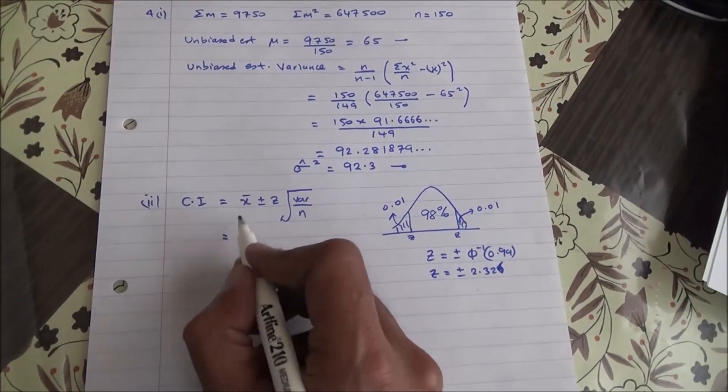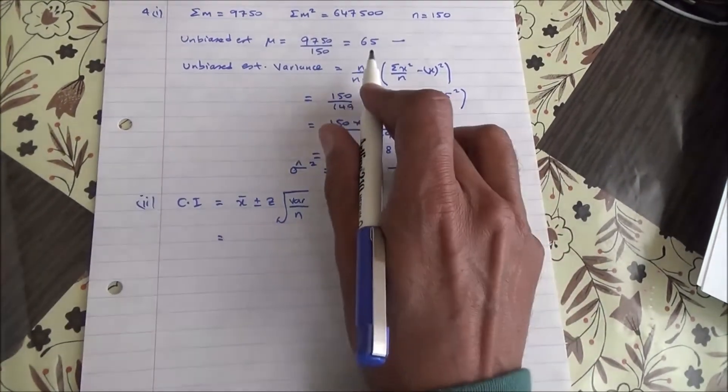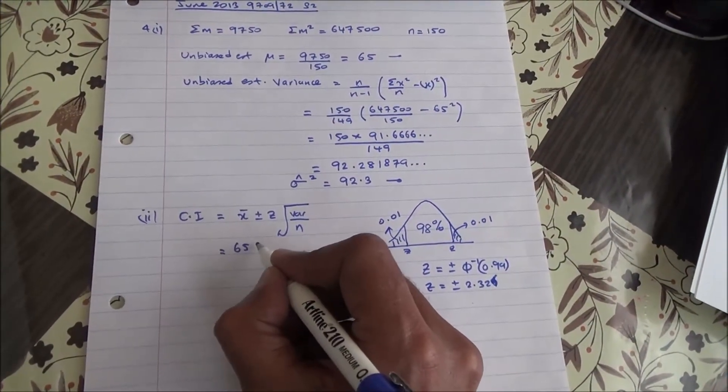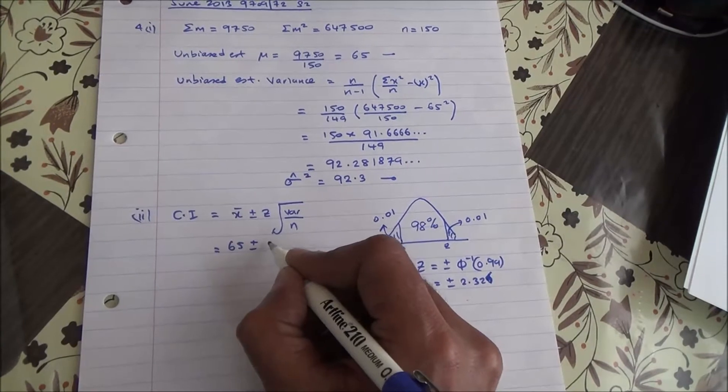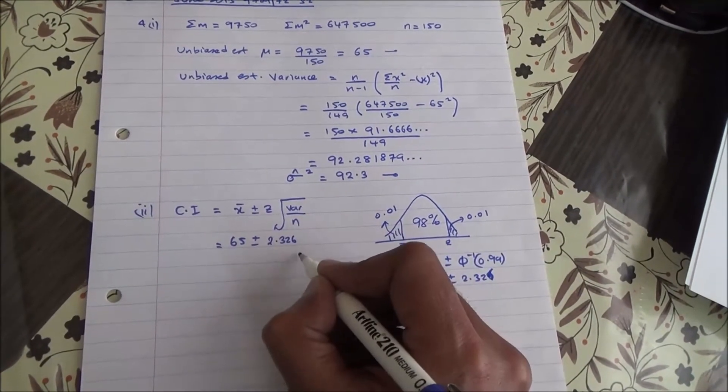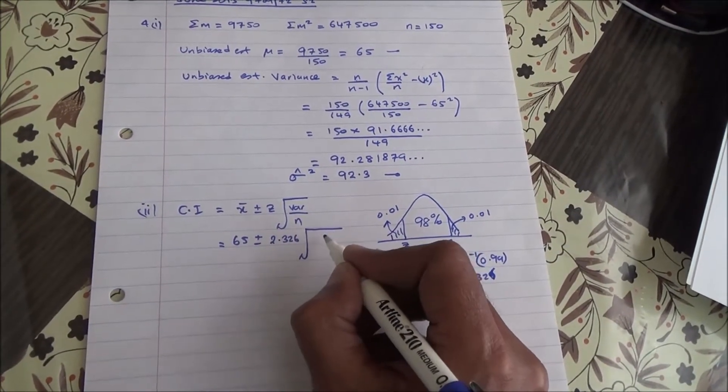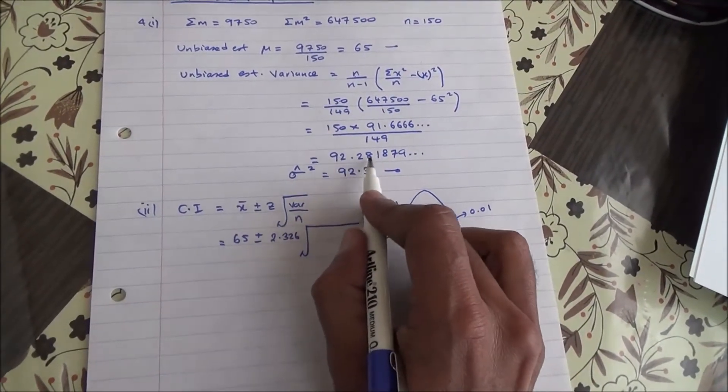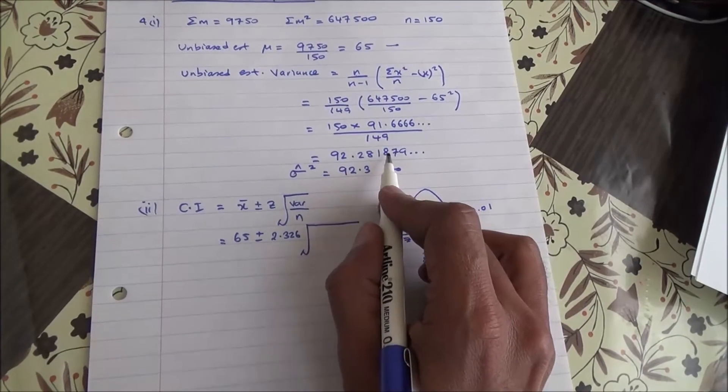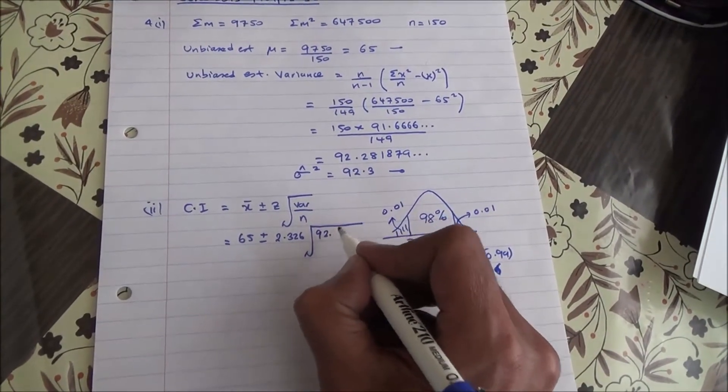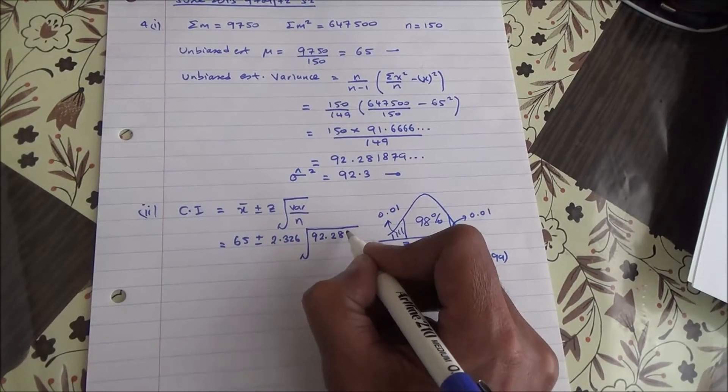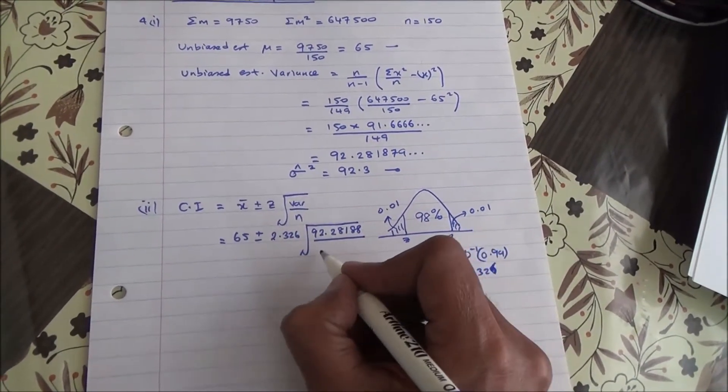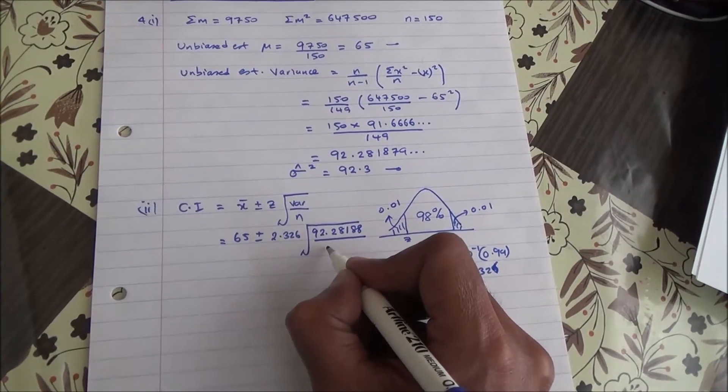Let's do it. The mean has been found to be 65. We're going to take 65 plus or minus the z value 2.326 times the square root of the variance, and the variance was found to be 92.2818. I'm going to take five decimal places to be a little bit more accurate, and all of that divided by 150.